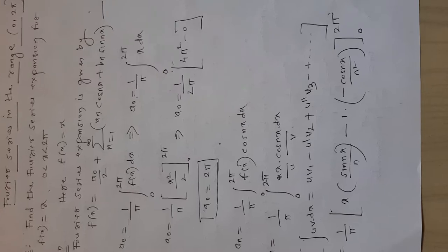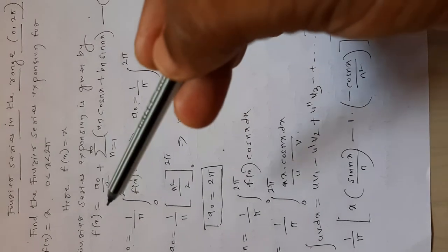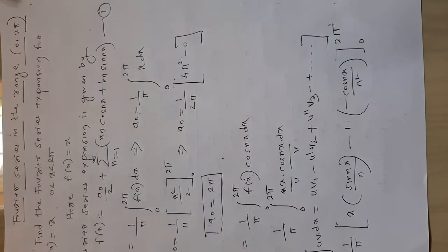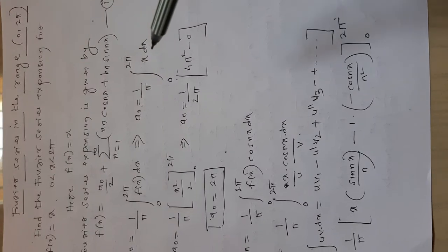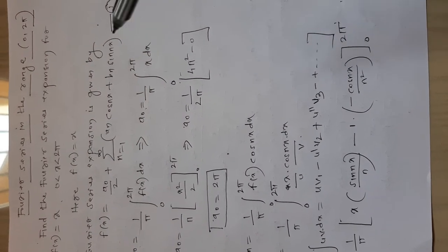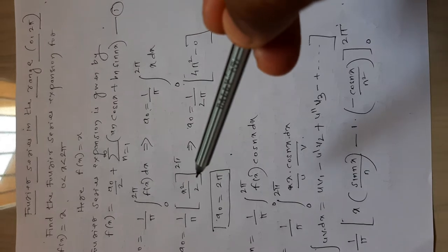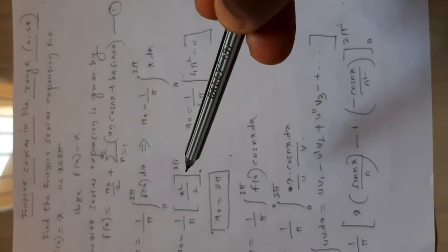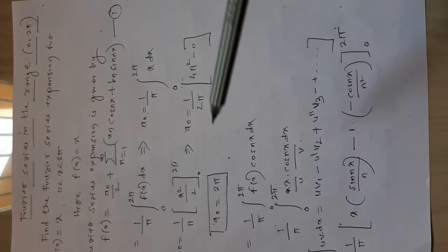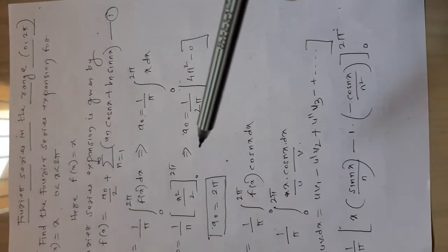First we will find a0. a0 = (1/π)·∫₀²π f(x) dx. We put the value f(x) = x. The integration of x is x²/2. Putting the upper as well as lower limits, we get a0 = 2π.